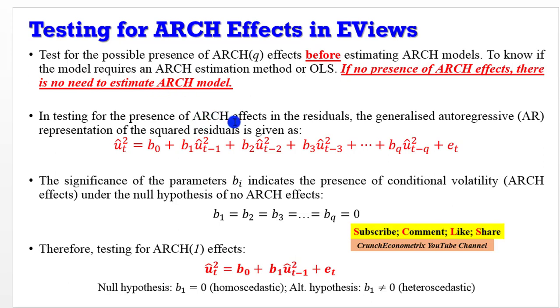In testing for the presence of ARCH effects in the residuals, the generalized autoregressive representation of the squared residuals is given. This is the econometric representation of the squared residuals that will be estimated.